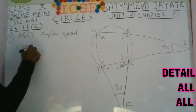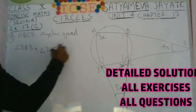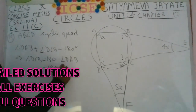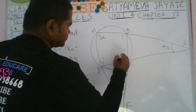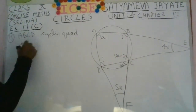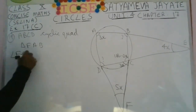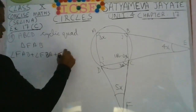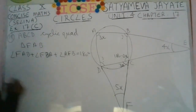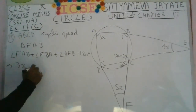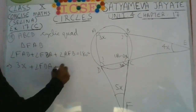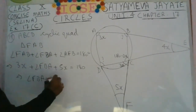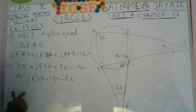Since angle DAB is 3x, and opposite angles in a cyclic quadrilateral are supplementary, angle BCD equals 180 minus 3x. In triangle FAB, the sum of interior angles is 180 degrees: angle FAB plus angle FBA plus angle AFB equals 180 degrees. Substituting FAB as 3x and AFB as 5x, angle ABC or angle FBA equals 180 minus 8x.